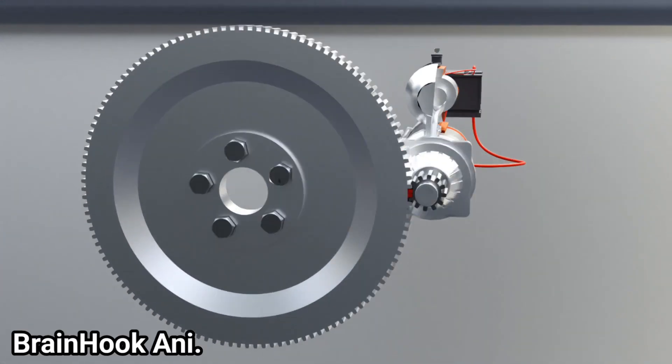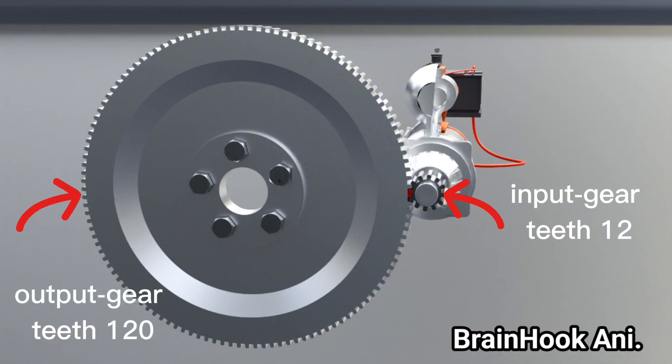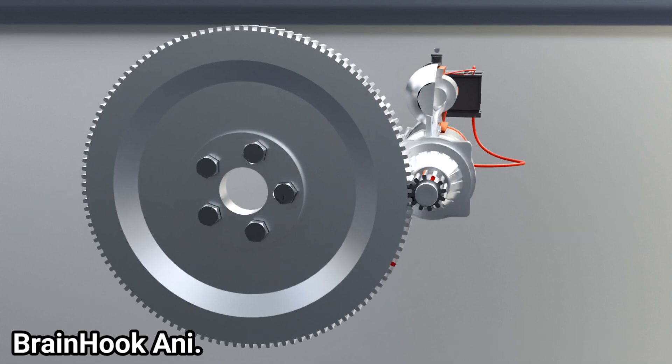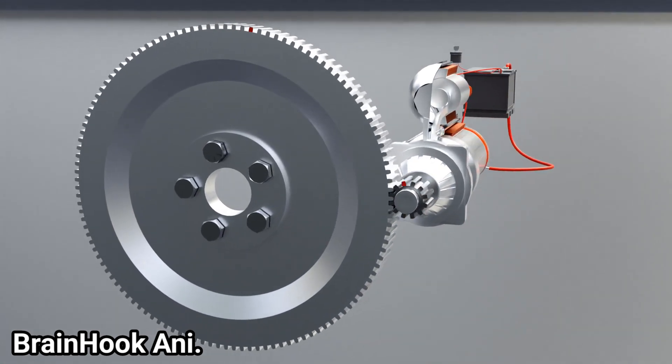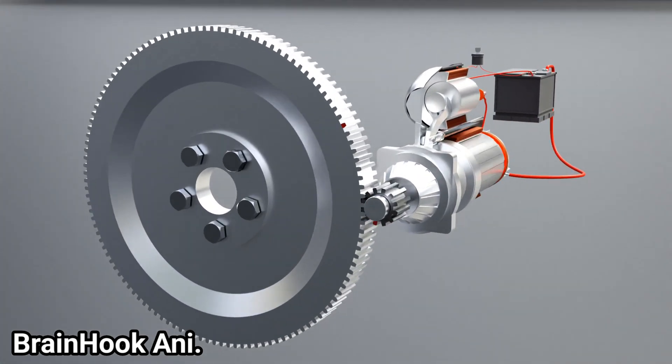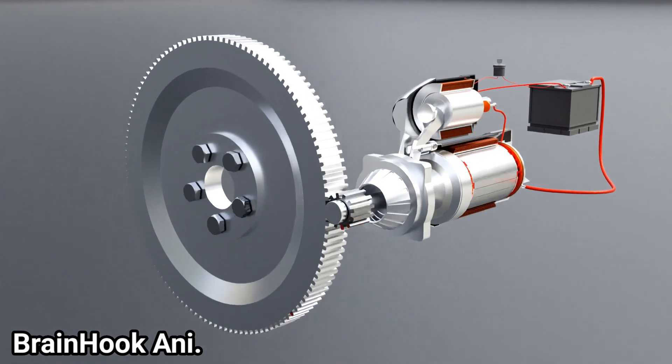For example, here the number of teeth of input gear is 12, and the number of teeth of output gear is 120. Hence, the gear ratio is 10 to 1. So, if the input gear rotates 10 times, the output gear rotates only once. That means that the output gear will turn slowly, but with great power, since the motor is turning at high speed. The torque generated from this gear reduction is still not sufficient to start the engine.